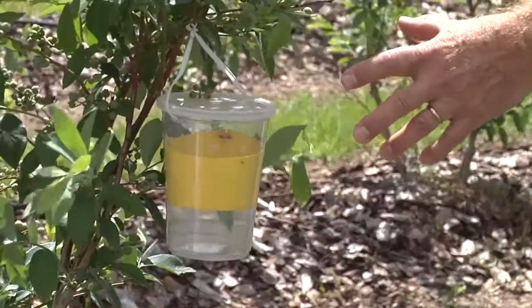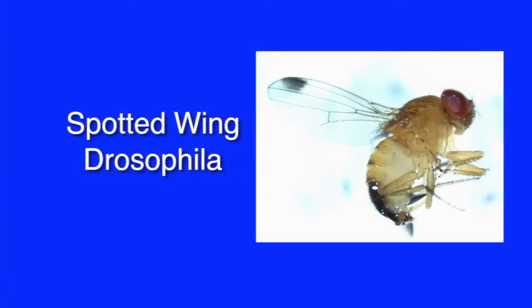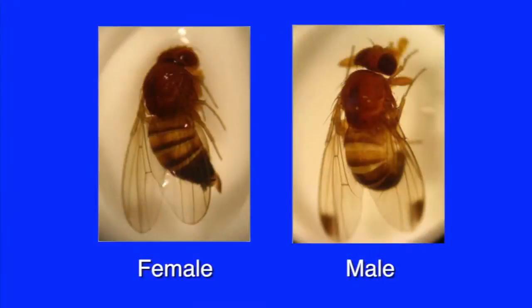What exactly are we trying to trap in this particular trap? Here we're trying to trap a new invasive spotted fruit fly — the spotted-winged drosophila. This is a new fruit fly that came into the United States in 2008, first recorded in California, and then in 2009 it was recorded in Florida, and now it has spread to about 28 counties in Florida. This is a very important pest because it attacks a lot of the soft-skinned fruits — for example, blueberries, strawberries, and blackberries. The female tends to lay eggs in the fruit, and the larva develops inside the fruit, which prevents the fruit from being marketable.